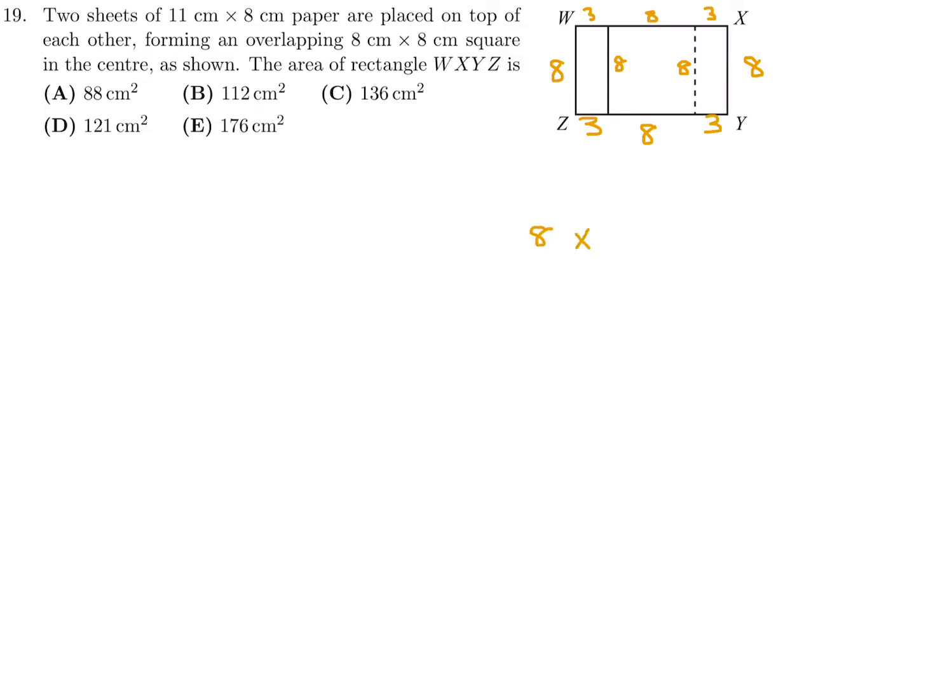So the dimensions of this look like 8 times 3 plus 8 plus 3, which is 14. And therefore the area would be 8 times 14, and 8 times 14 is 112. So number 19, the answer is B.